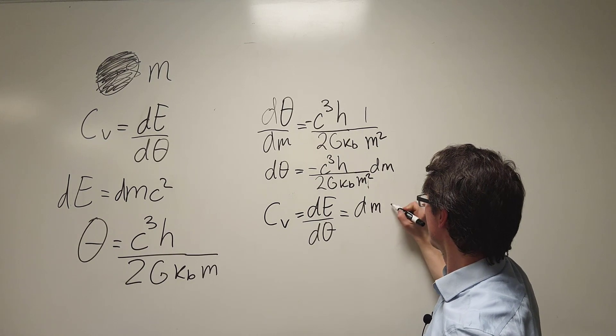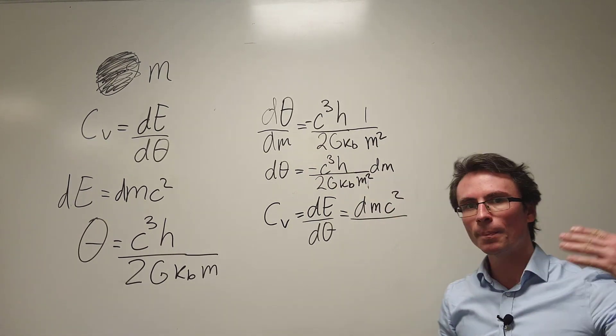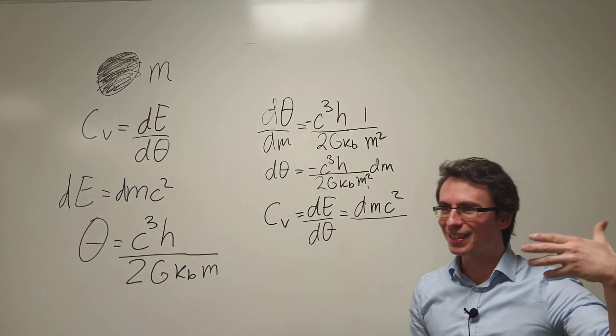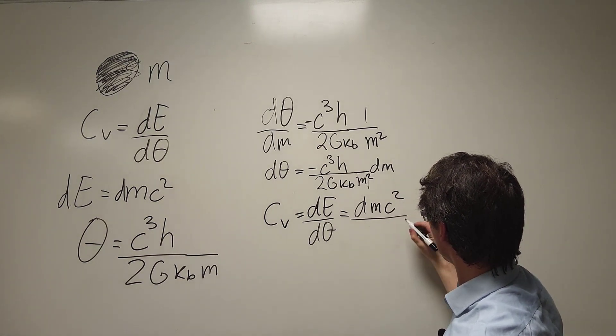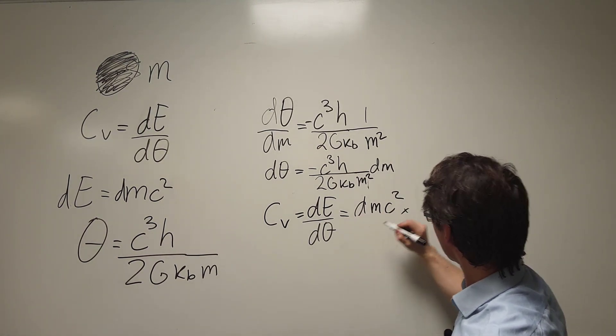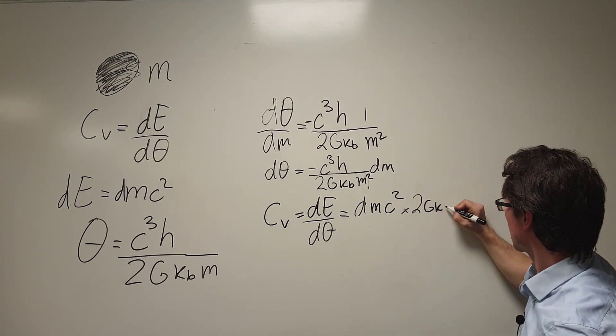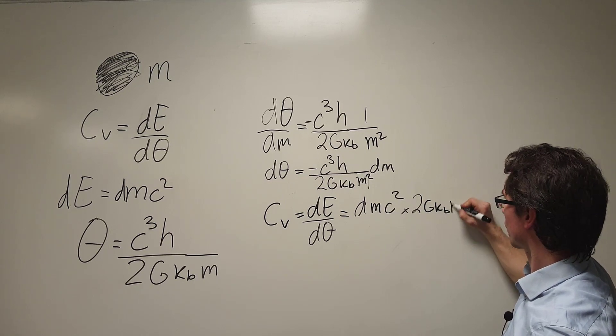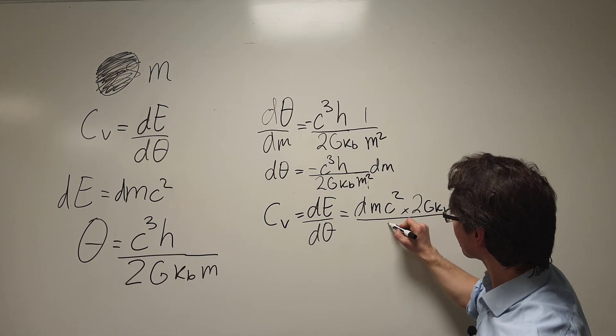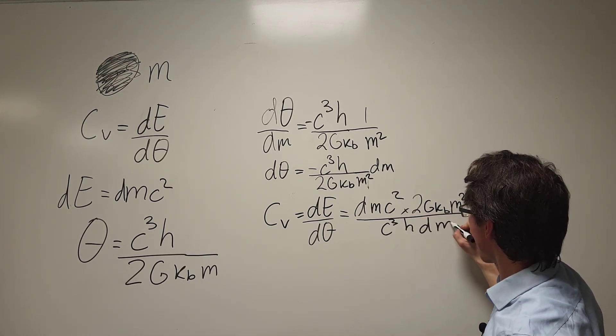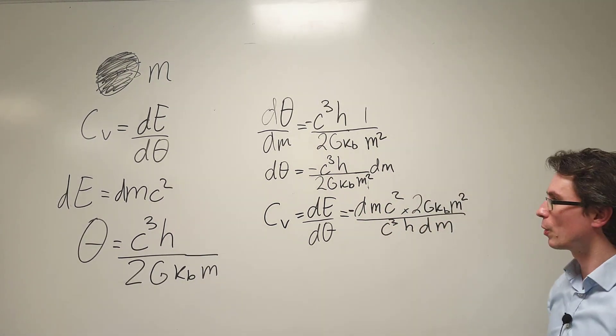Now the E is just equal to dm c squared. We're going to be dividing that by this fraction. Now remember dividing by a fraction is the same as multiplying by the inverse. So I'm going to essentially just multiply this by 2 g multiplied by k subscript b Boltzmann's constant m squared. I'm going to be dividing that by c cubed h dm and this whole expression will be negative which is really important.